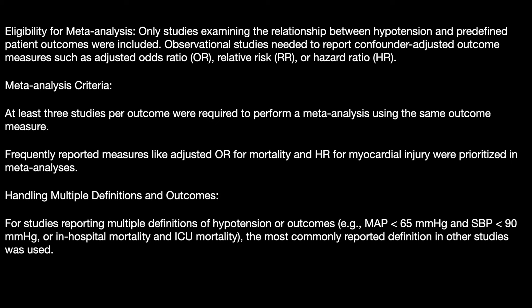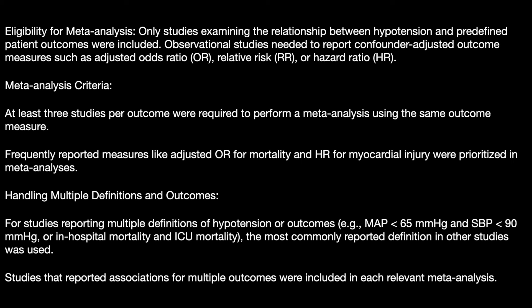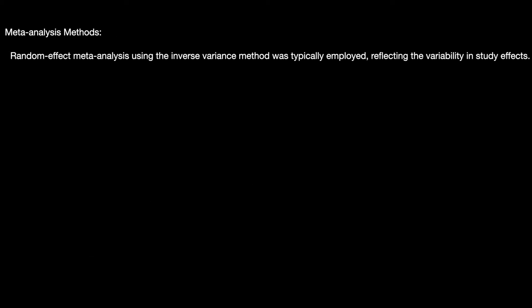For handling different definitions, studies reporting multiple definitions of hypotension such as MAP less than 65 or SBP less than 90, the most commonly reported definition in other studies was used. Studies that reported associations for multiple outcomes were included in each relevant meta-analysis. Random effect meta-analysis using the inverse variance method was typically employed, reflecting the variability in study effects.